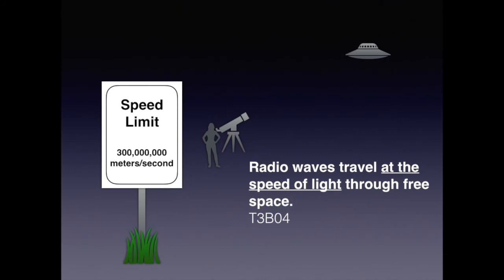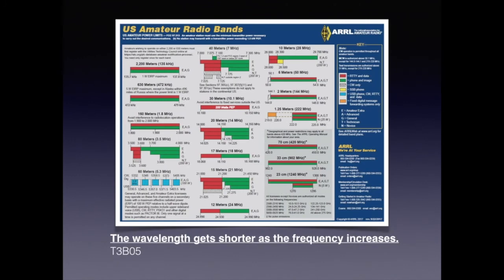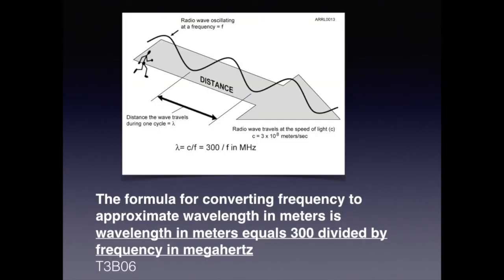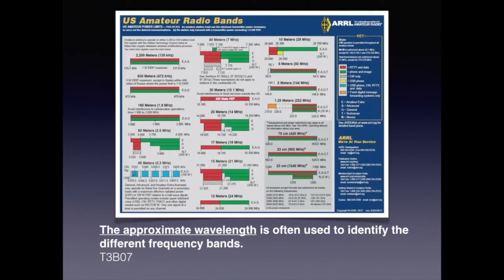For the exam, know that radio waves travel at the speed of light through free space. You can validate this by doing the math using the wavelength formula or by looking at the band plan chart that lists frequency and approximate wavelength. Remember that the wavelength gets shorter as the frequency increases. The formula for converting frequency to approximate wavelength in meters is: wavelength in meters equals 300 divided by the frequency in megahertz. The approximate wavelength is often used to identify the different frequency bands.